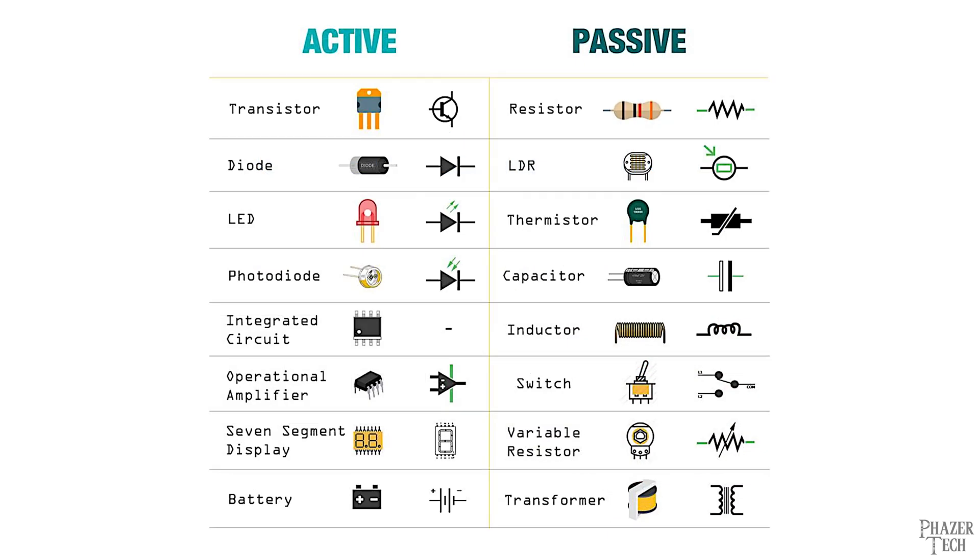Let's first start by going over what active components are and the main differences when compared to passive components, which include resistors, capacitors, inductors, and transformers, all of which I've already covered in previous videos. These are considered passive components because they don't require external power to work correctly. In other words, there's no minimum voltage or any other requirements for them to operate as intended. Their functionality is inherent in their design.